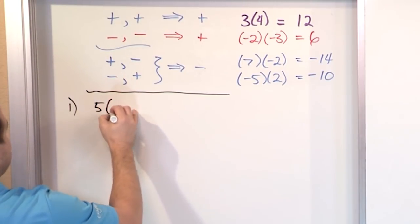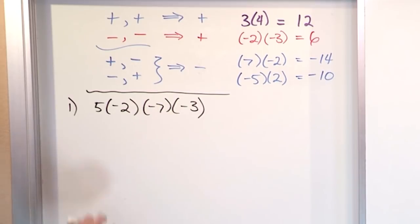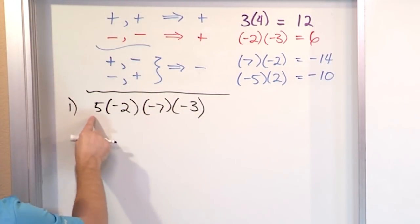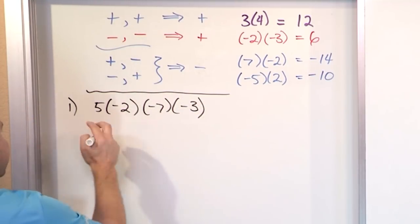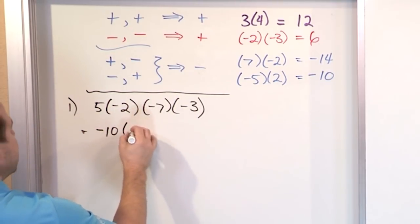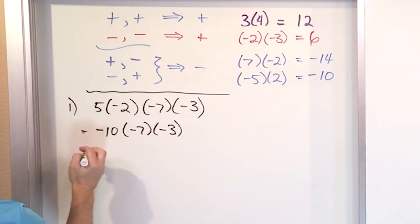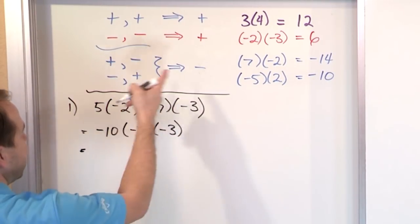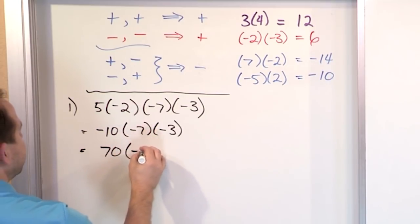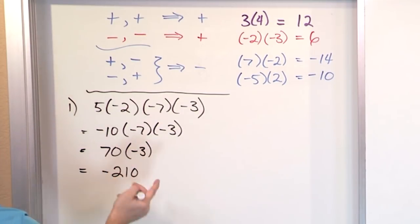Let's say you have 5 times negative 2 times negative 7 times negative 3. We try to do everything inside the parentheses first, but all we have is numbers, so there's nothing to do. We don't have exponents or addition or subtraction — all we have is multiplication, so we do it left to right. First, 5 times 2 is 10, but they're different signs, so it's negative 10. Then negative 10 times negative 7: 10 times 7 is 70, and negative times negative gives positive 70. Finally, positive 70 times negative 3: different signs, so 7 times 3 is 21, giving negative 210.